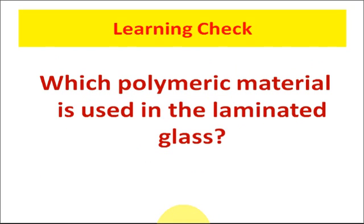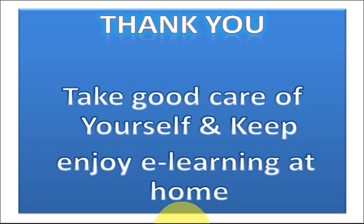Today's learning check question: Which polymeric material is used in laminated glass? Remember, laminated glass is prepared by sandwiching various layers of glass with a polymeric material in between. Think about the answer — we will discuss it in our next live class. Till then, take care and keep enjoying e-learning at home. Thank you.